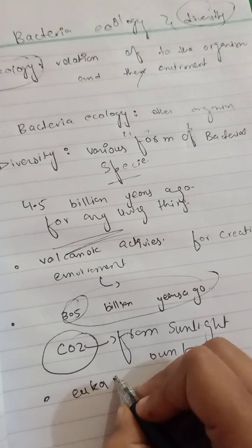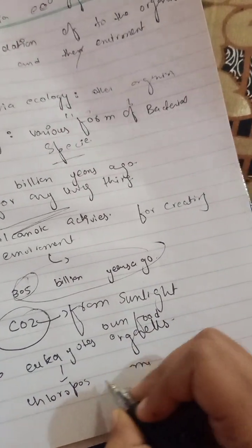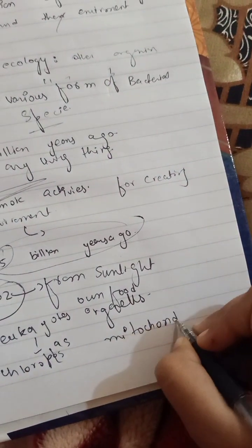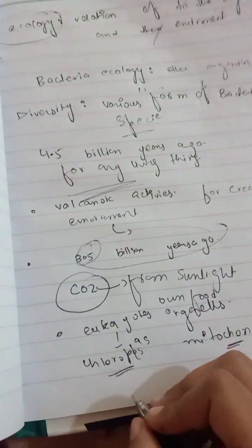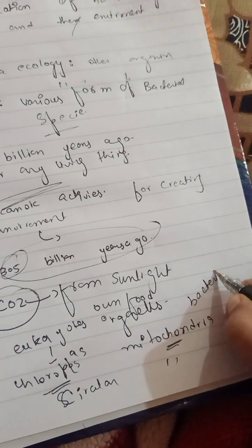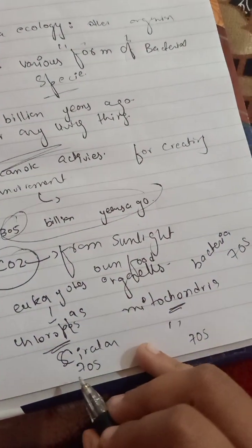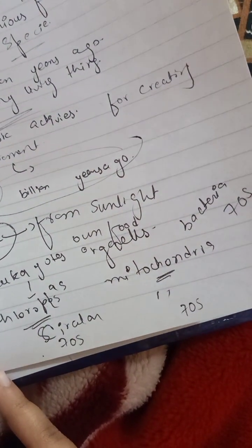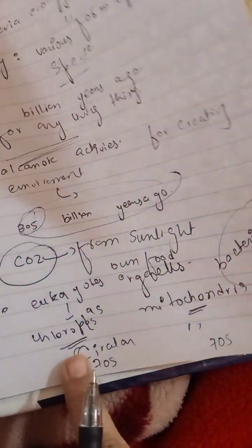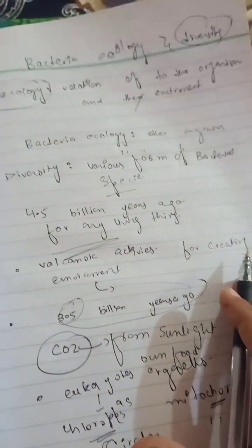If you compare bacteria with eukaryote organelles like chloroplasts and mitochondria, bacteria share similar properties. Both have circular DNA — mitochondria have circular DNA and bacteria also have circular DNA, which is called a plasmid. The ribosome size in mitochondria is 70S, and bacteria also have 70S ribosomes. They are also rich in guanine and cytosine in their genetic material, and they make their own proteins — just like chloroplasts and mitochondria do.